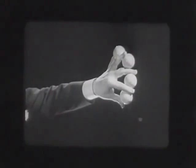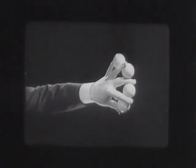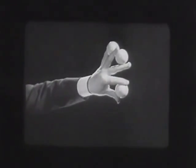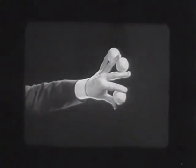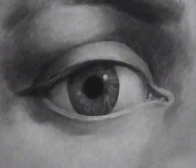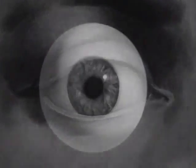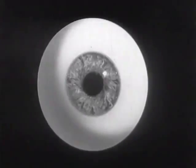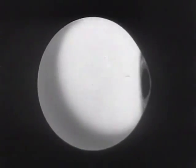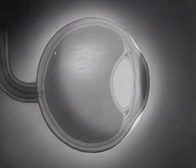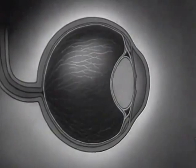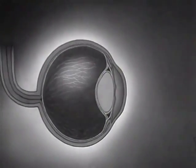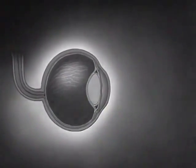Motion pictures are based on an optical illusion, just another case where seeing is believing. To understand how we see, let's turn the tables on the human eye and look at it instead of through it.